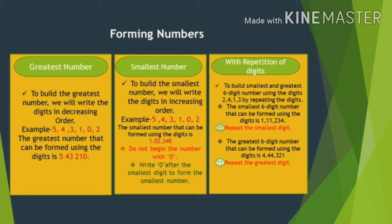We write 1 three times first, then 2, then 3, then 4. Similarly, to form the largest or greatest number, we will repeat the largest digit, which is 4. So the number will be 4,44,321 — that is, three 4s, followed by 3, then 2, then 1.